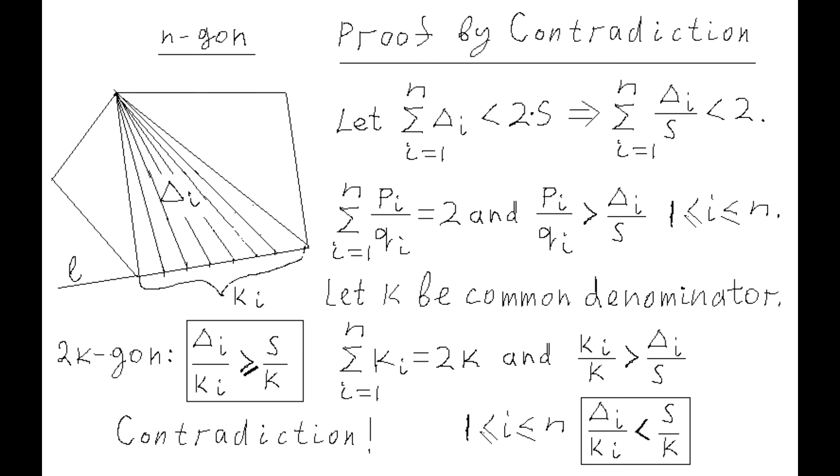This inequality can be rewritten as the area of each super triangle over KI is strictly less than S over K. Now we can divide each side of the given polygon into KI equal segments and consider these equal segments of each super triangle the side of 2K gon.